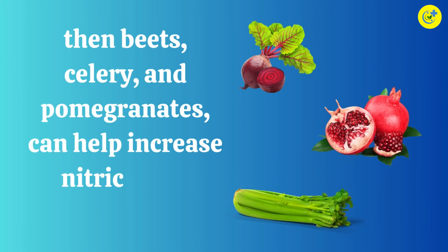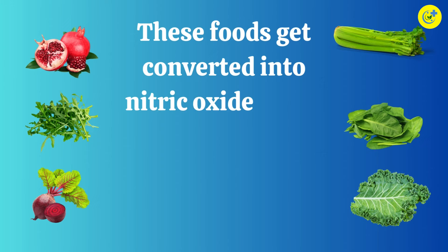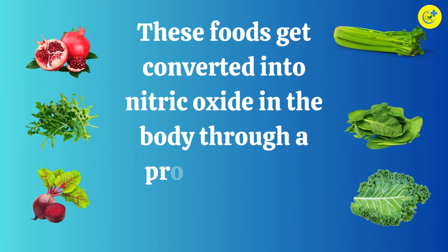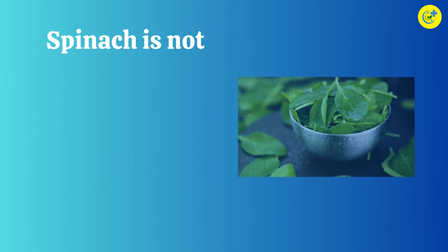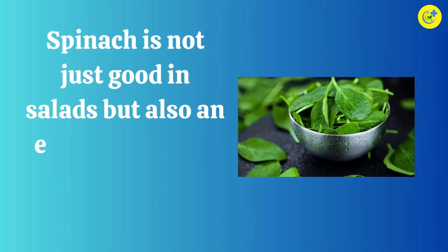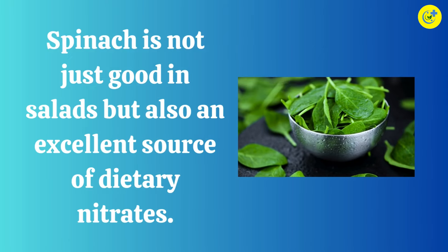including spinach, kale, and arugula, then beets, celery, and pomegranates, can help increase nitric oxide levels. These foods get converted into nitric oxide in the body through a process called nitrate reduction.